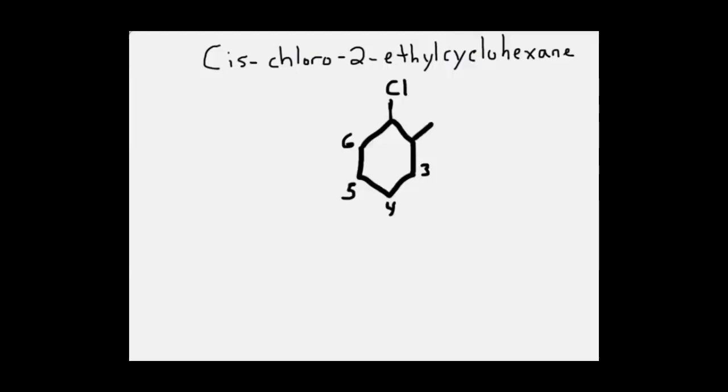My ethyl group is at position 2. The last thing to notice is that the cis designation is at the front of the name. Both substituents, ethyl and chloro, are on the same side of the cyclohexane ring.